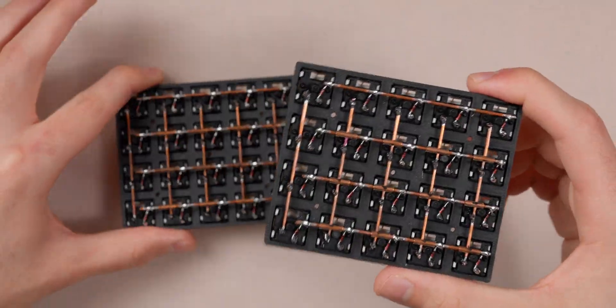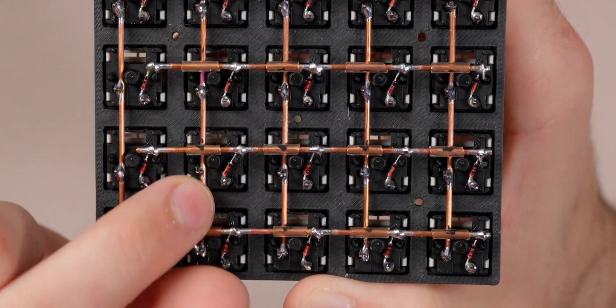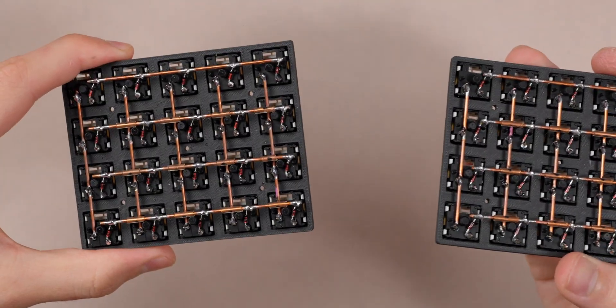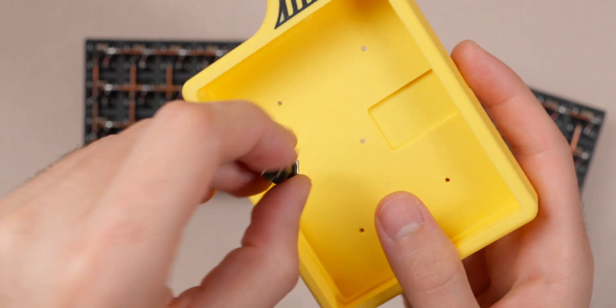Here are both halves of the matrix all wired up. You can see we have all our rows with the diodes going here and then we have our columns running vertically. Everything is wired up on both halves. The next step for this build is to get the TRS cable set up first because that's basically just going to mount into the case. We have our little connector here and the case that will mount in there with this little nut on it.